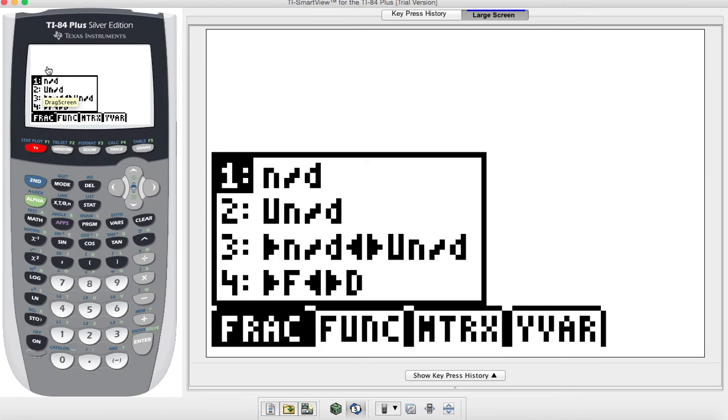For our fractions, we have the option of the first option is just a regular fraction numerator over denominator. The second option is a mixed number, so it'll have a whole number and then a fraction. The third option will switch back and forth between an improper fraction to a mixed number, and then fourth option goes fraction to decimal, and then also back from decimal to fraction.